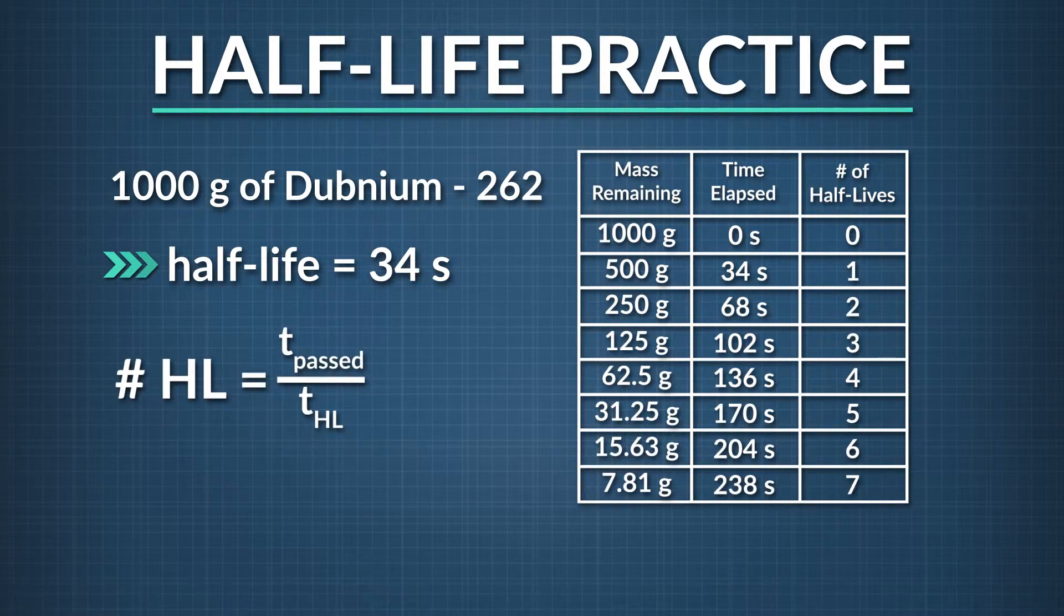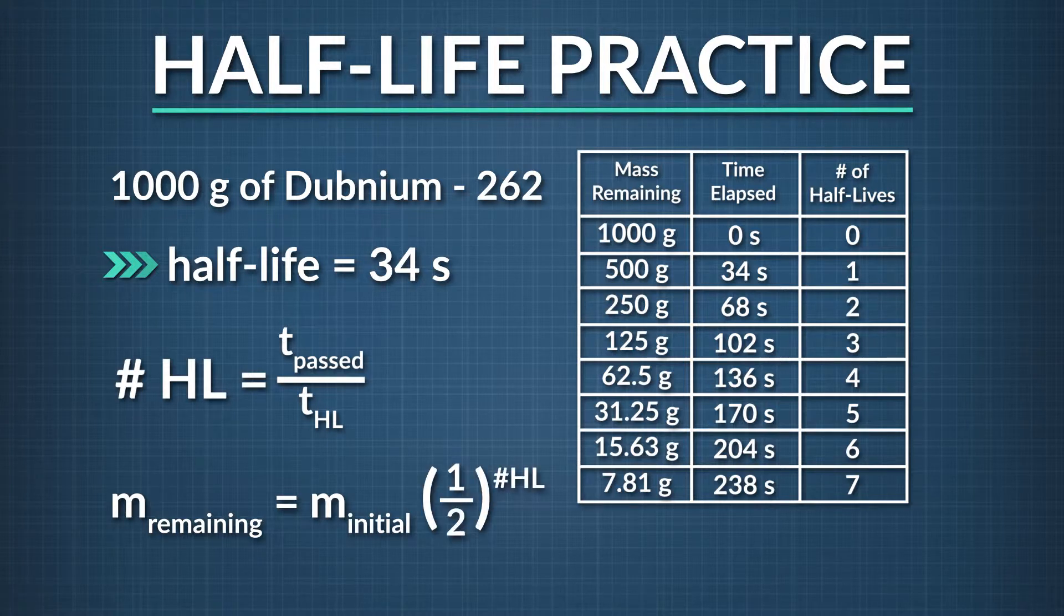If we start with some initial amount of radioactive isotope, call it m-initial, the mass that's left over, call it m-remaining, at any given time equals the original mass times one-half raised to the number of half-lives completed. Let's try using these relationships to help us answer questions about atomic half-life.